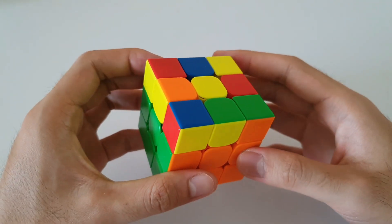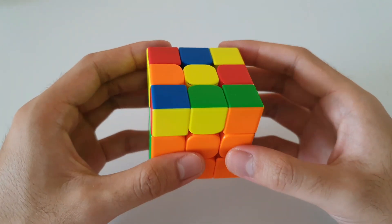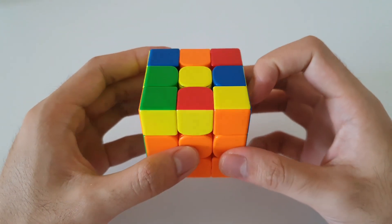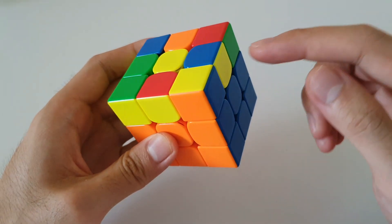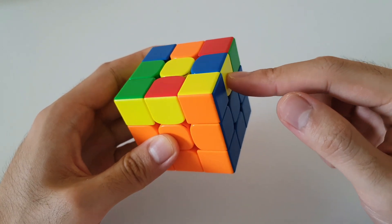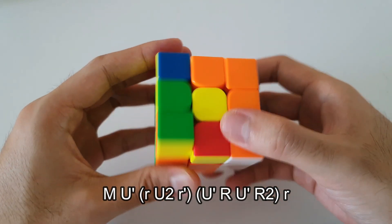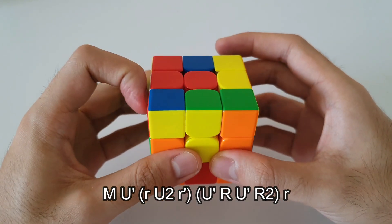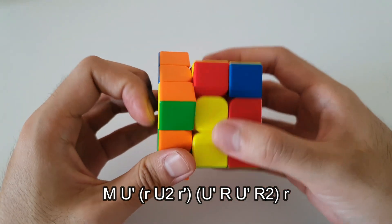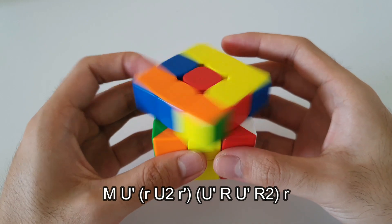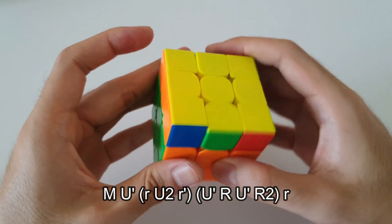So once again I'll show an alternative algorithm for this case as well with better finger tricks. For this case with the alternative algorithm we want to hold it so that the front corner is on the front and we also have the single yellow edge facing the right side this time. So the algorithm starts off with an M move which I like to do like this followed by a U'. Following that, wide R U2 wide R'. Finally it's U', R U', R2 and then wide R.